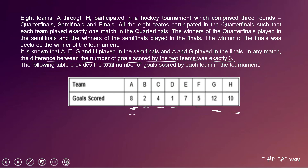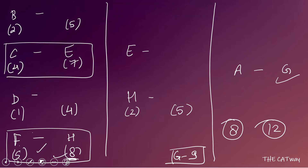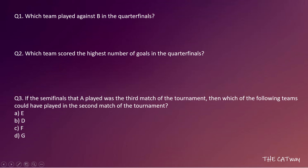E scored a total of 7 goals in the complete tournament, and we've now established E scored all 7 in the quarter-final against C. So in the semi-final, E scored zero goals, meaning E's semi-final opponent scored 0 plus 3 equals 3 goals. Now we need to determine the positions of A and G.